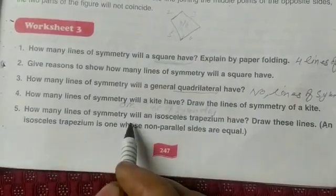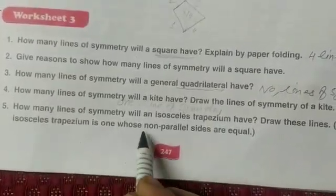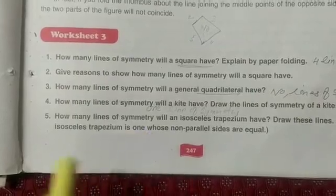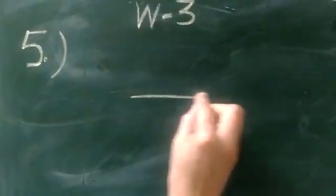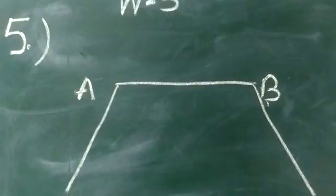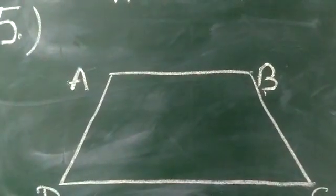After that, question number 5: how many lines of symmetry will an isosceles trapezium have? Draw the line. An isosceles trapezium is one whose non-parallel sides are equal. So we draw question number 5 — isosceles trapezium — you can form it with vertices A, B, C, and D. So this is your isosceles trapezium.